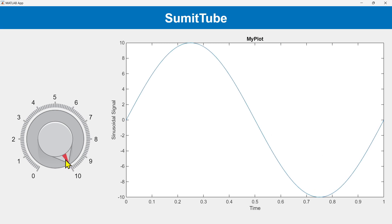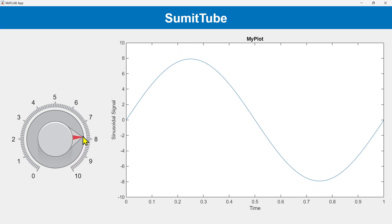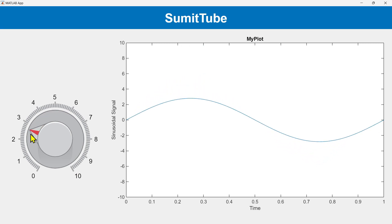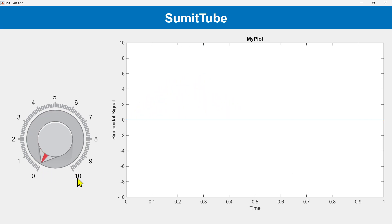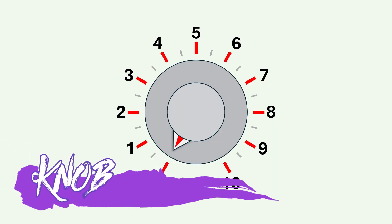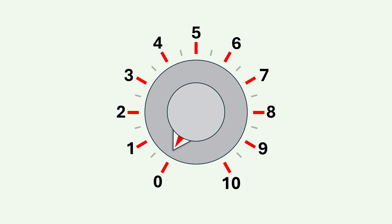In the same way, if we decrease the knob value, the sinusoidal signal amplitude would decrease. In a previous tutorial video, we learned how to use the knob in MATLAB App Designer. As we are going to use the knob component in today's app, I would recommend watching that video first. You can find the link in the description below.